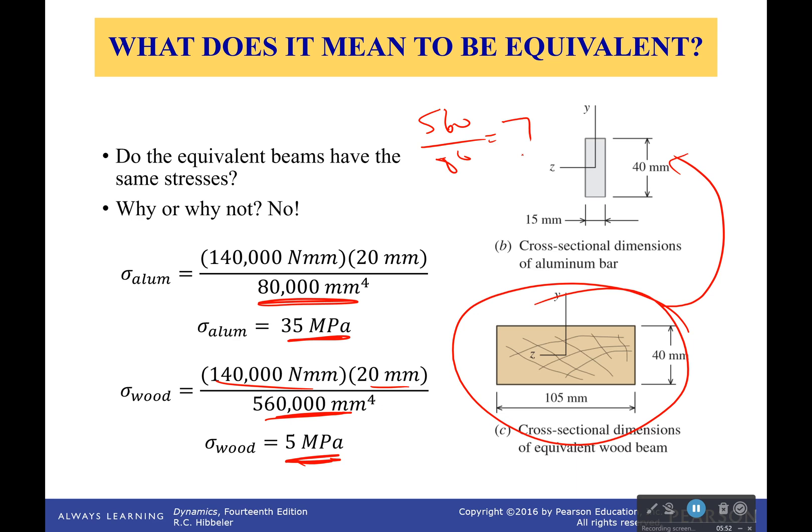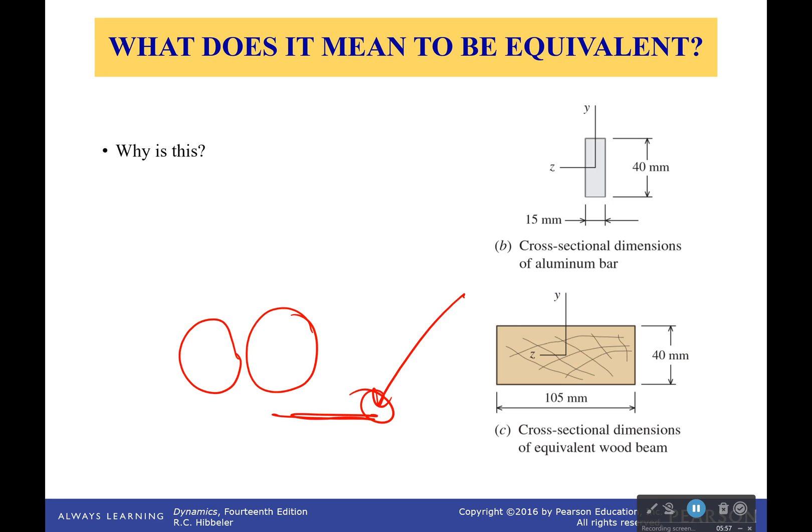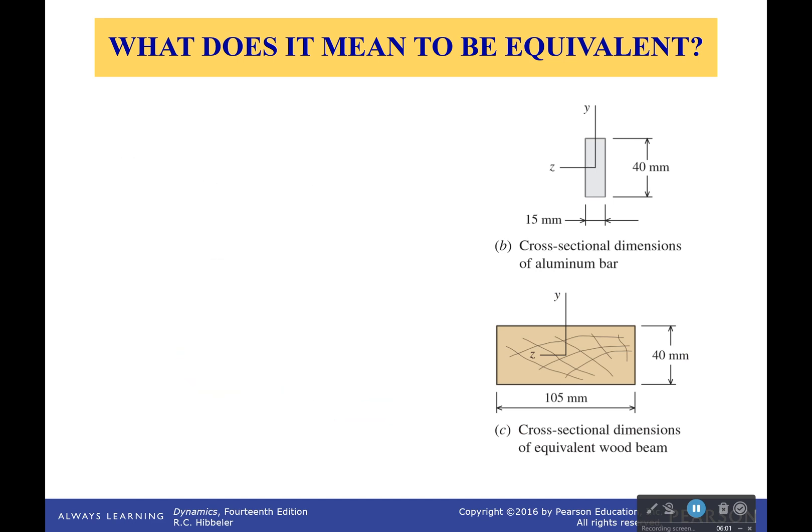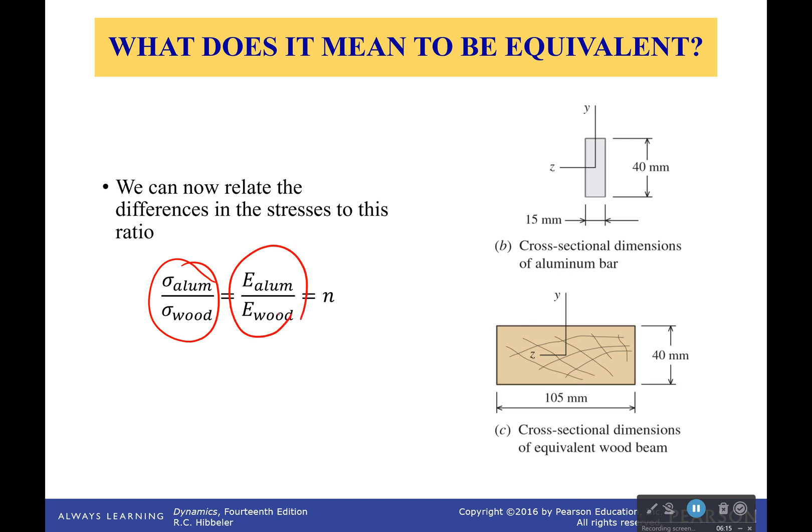Seven. Yeah, interesting. Think about it, that modular ratio is going into like a multiple. We're going to multiply it to correct our stresses back to their original values. So we can then relate the difference in the stresses to this ratio. So we have our aluminum stress and the stress for wood. It's going to be equal to the modulus of elasticity of aluminum over modulus of elasticity of wood, which will be equal to our modular ratio.